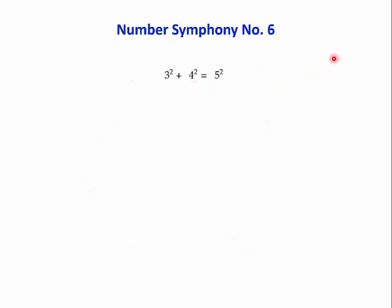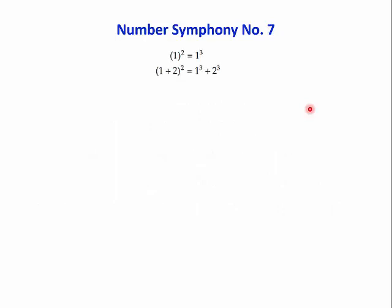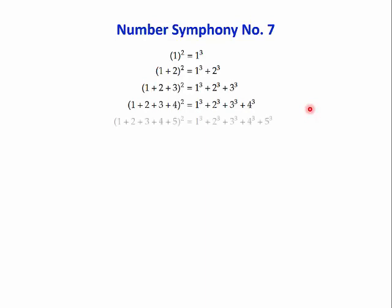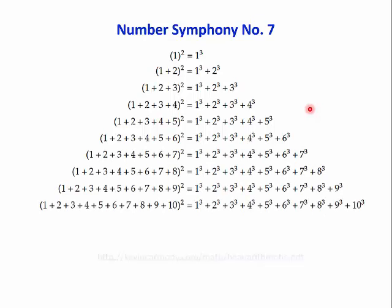Symphony number six involves square numbers: three squared plus four squared equals five squared. Here we've got three square numbers equal to two square numbers, and you can see how they continue: ten, eleven, twelve, thirteen, fourteen. Is it possible to predict the next line? Symphony number seven: one squared equals one cubed. One plus two, squared, equals one cubed plus two cubed. One plus two plus three, squared, equals one cubed plus two cubed plus three cubed — another nice pattern using squares and cubes. These came from Kevin Carmody's website, which has other symphonies as well.